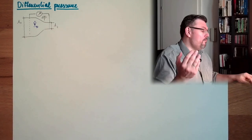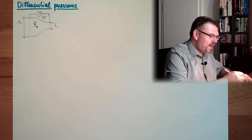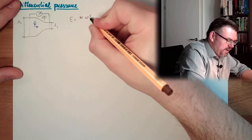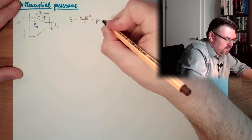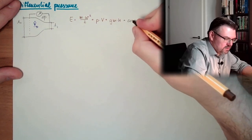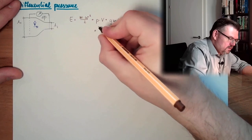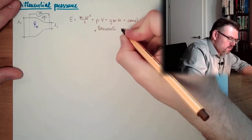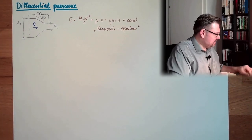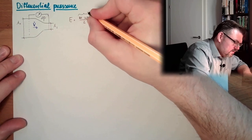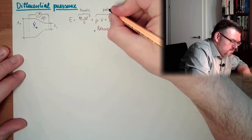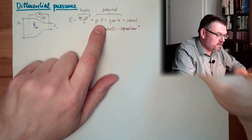We start at Bernoulli's equation. So the energy equation is mass multiplied by velocity squared half plus pressure multiplied by volume plus height. This is constant, this is Bernoulli's equation. So this is kinetic energy, this is potential energy, this is from the pressure, and this is from the height.